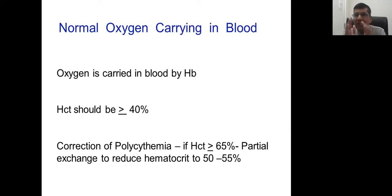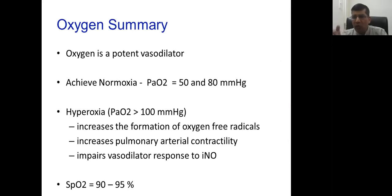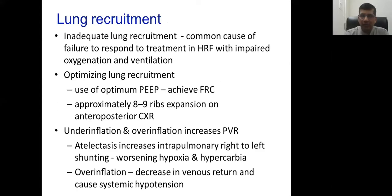Oxygen is a potent vasodilator, but hypoxia is detrimental for the brain. Hyperoxia is also detrimental due to free oxygen radical formation, causing vasoconstriction and impairment of nitric oxide. Hence target saturation 90–95%, PO2 50–80 mmHg, CO2 permissive hypercapnia 40–55 mmHg, pH acceptable range 7.25–7.30. Oxygen may be delivered via CPAP, conventional ventilation, or high-frequency ventilation depending on baby's needs.